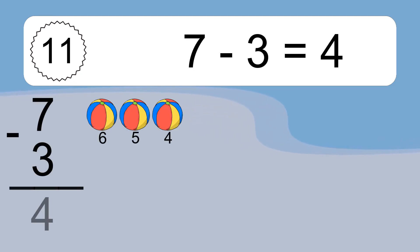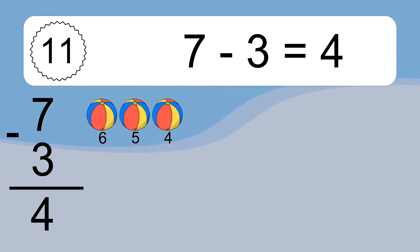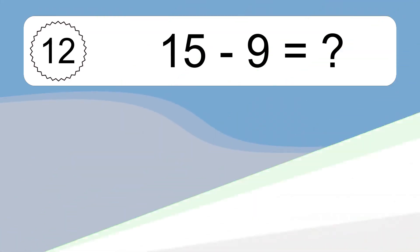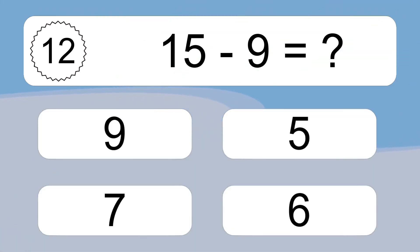7 minus 3 equals 4. Let's count it. 6, 5, 4.